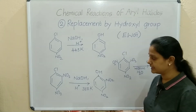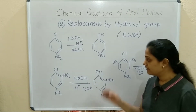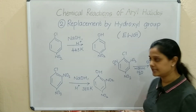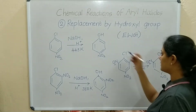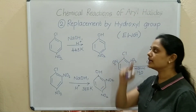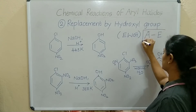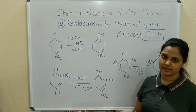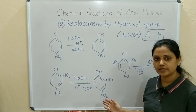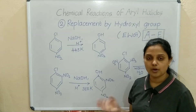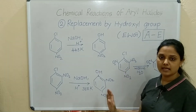What we are doing here is addition first, and then elimination. So in replacement by hydroxyl group, first we are adding OH and then removing Cl — this is called addition-elimination reaction. More the number of electron withdrawing groups, more will be the reactivity, so less harsh conditions are needed.